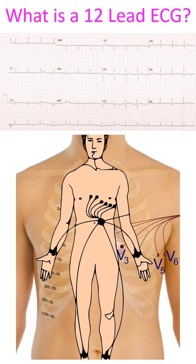In augmented leads, the positive pole is the index limb while the negative terminal is derived from the other two limbs. The positive pole of AVR is the right arm, that of AVL is the left arm, and that of AVF is the left foot. The right foot is connected as a ground electrode during all electrocardiographic recordings.